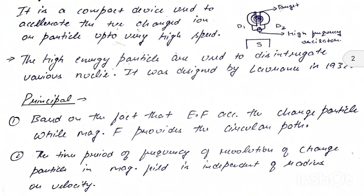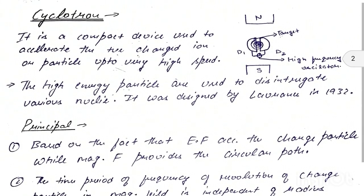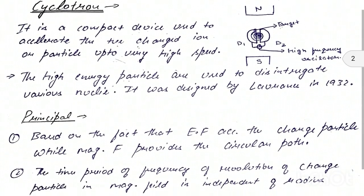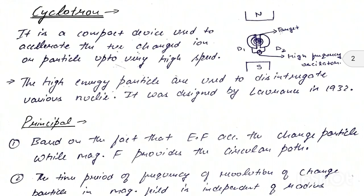Cyclotron is a device with which we can give high energy to any positive ion or positive particle and accelerate it to high speed. Using that particle, we can disintegrate any nuclei. In this device, on one side, a magnetic field is set up.